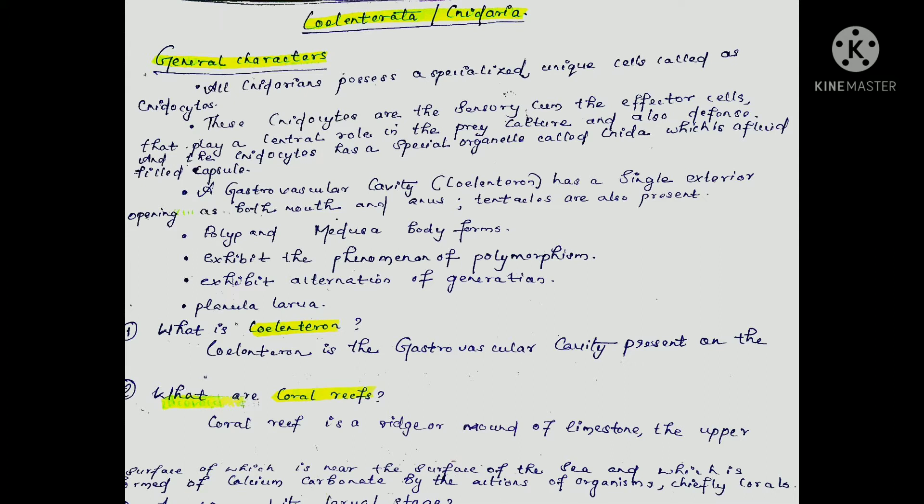These cnidocytes are the sensory and effector cells. The body cavity is known as the coelenteron. It has a single exterior opening serving as both mouth and anus, and tentacles are also present. The coelenteron is a gastrovascular cavity.